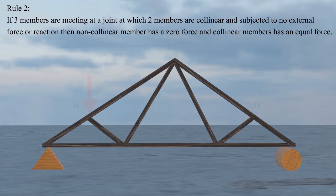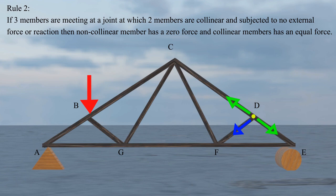In this roof truss model we are applying a point load P in the vertical direction at joint B. Due to this point load, let us find how many members have zero forces. Starting with joint D, member DC and member DE are collinear members and member DF is a non-collinear member, and at joint D no external force or reaction is applied. Hence member DF will have zero force and members DC and DE will have equal force. So we remove member DF from this structure.